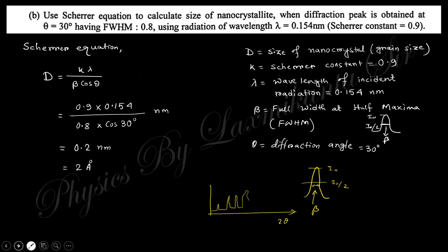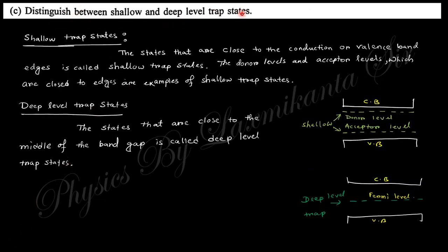Next question: Distinguish between shallow and deep level trap states. In n-type semiconductors there are donor levels, in p-type there are acceptor levels. When they are close to the conduction or valence band, this is called shallow trap state. In intrinsic semiconductors, the Fermi level is between the two bands. Energy levels at the mid position are called deep level trap states.